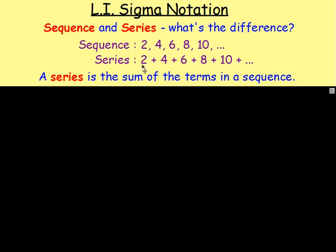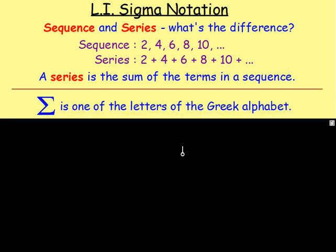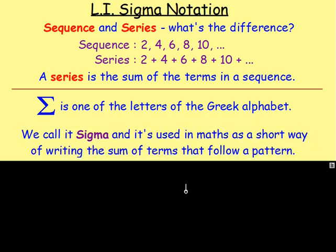However, it sometimes takes quite a bit of time to write it all out like this, so we need a quick way of doing that. What we use is this — it is one of the letters of the Greek alphabet. It is sigma, and it is used in maths as a way of writing the sum of terms that follow a pattern.